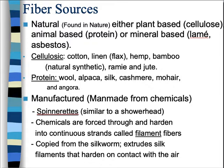Examples of cellulose would be cotton, linen (which is made from the flax plant), hemp, bamboo, ramie, and jute. An example of protein would be wool, alpaca, silk, cashmere, mohair, and angora — all types of animal coats, animal fur, or animal hair. And then there's another category: man-made from chemicals. These fibers are essentially made from a solution that is made by man.